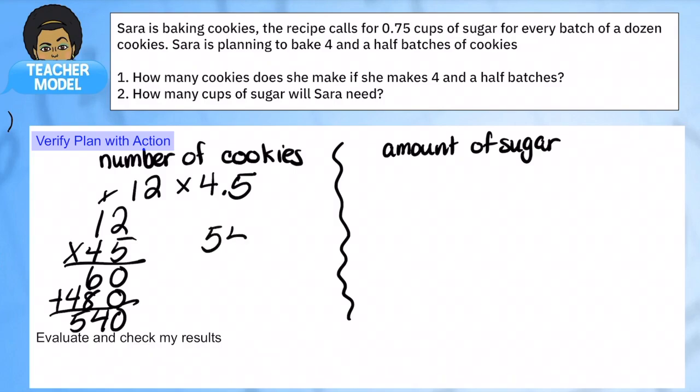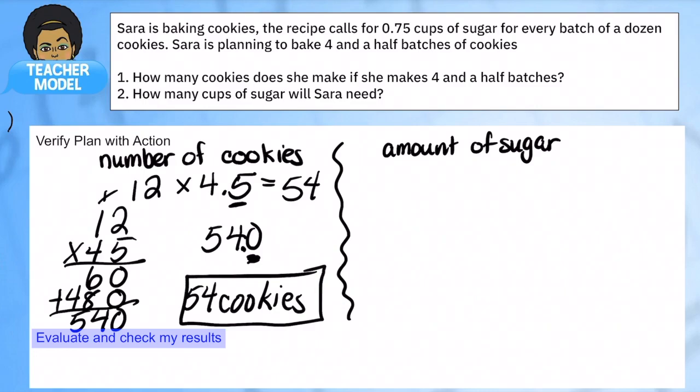Oh, we are forgetting the decimals. So in our factors, we have one number behind the decimal, which means in our product, we must also have one number behind the decimal, which means we have actually fifty four cookies. So that is our answer for the first part. Sarah actually makes fifty four cookies. So let's put that in for the first part. And let's go to the second part.